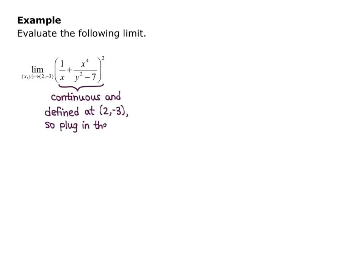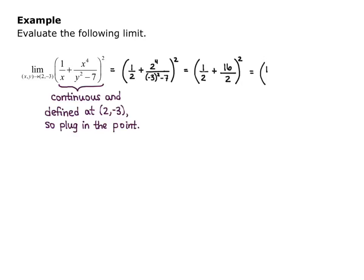So we plug in the point. I plug in 2 for x and -3 for y, and I get (1/2 + 2⁴/(-3)² - 7)². This is the quantity (1/2 + 16/2)², which is equivalent to (17/2)². So I get 289/4 as my final limit.